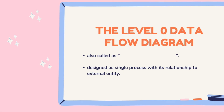The level 0 data flow diagram is also known as a context diagram. It is designed as a single process with its relationship to external entities. It has only one process node, and it may have multiple external entities. It represents the entire system as a single process node, with input and output data indicated by incoming and outgoing arrows.